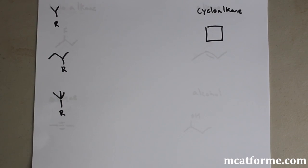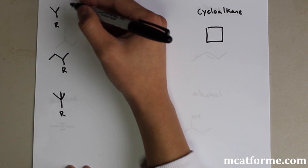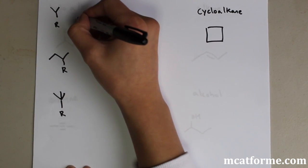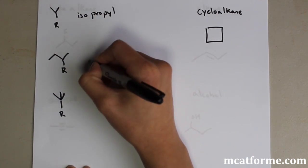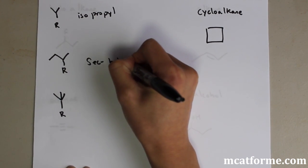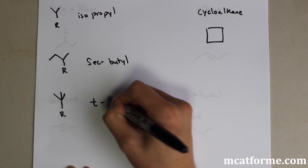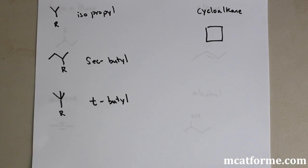The next thing we're going over are some very basic common names of substituents we need to know for the MCAT. These are common names, different from IUPAC names, but we'll need to know them. The first is isopropyl, then sec-butyl, and T or tert-butyl — you can see both on the MCAT.